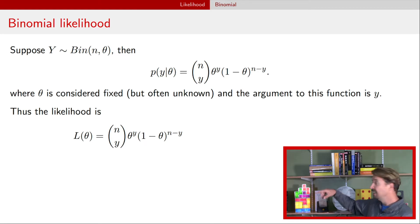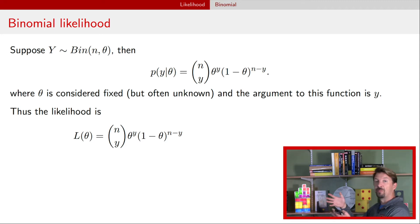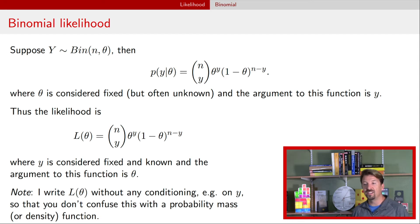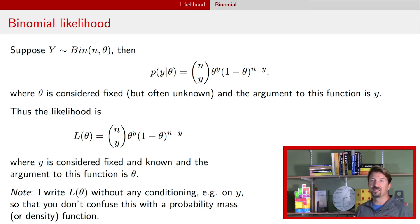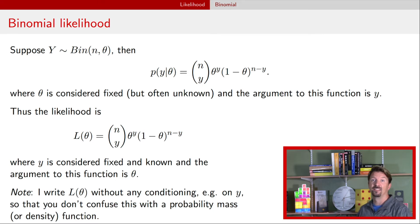So we have exactly the same thing — if you look at these two equations, they look identical. All we've done is change our perspective. The first equation was thinking about y as being the variable, as a function of y. Now we're thinking about it as being a function of theta for a fixed value of y. I want to comment briefly on the notation: you might be wondering why I don't condition on y now that y is fixed. That's because the likelihood is not a probability mass or density function — I don't want to confuse you and make you think that it is. The likelihood is just a function; it doesn't integrate or sum to one. So I'm just going to write L(theta) to denote the likelihood, even though implicitly y is fixed and known.